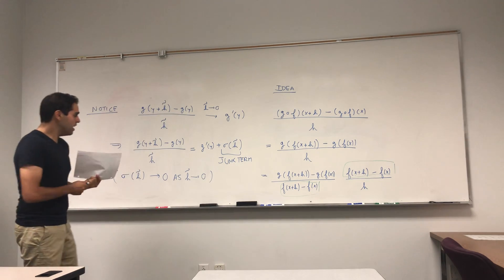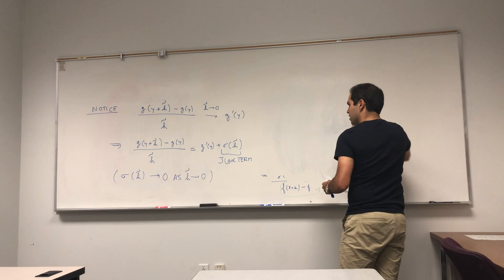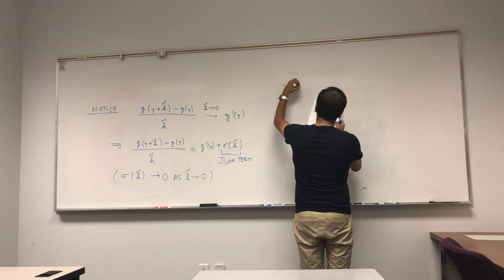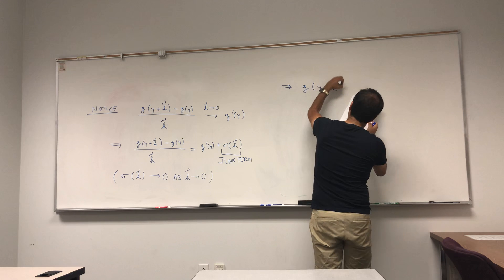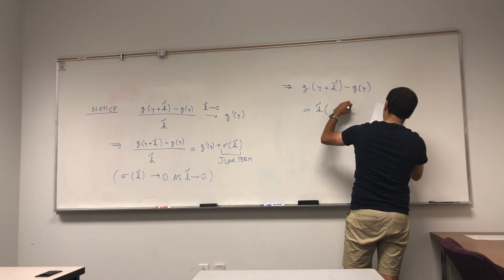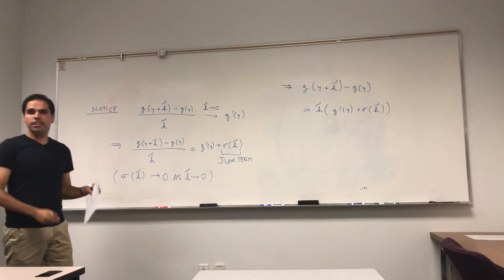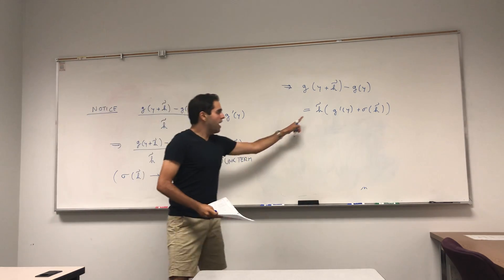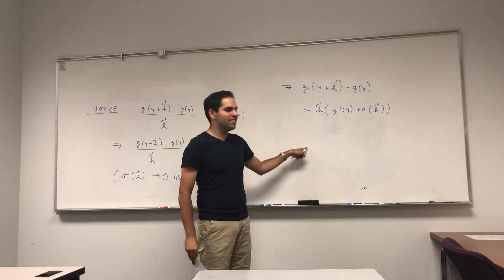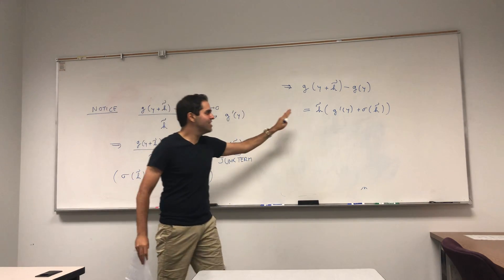This is supposed to remedy the earlier step. What we have is: multiplying through by h-tilde, g of y plus h-tilde minus g of y equals h-tilde times g prime of y plus sigma of h-tilde. The important thing is this works even if h-tilde is zero — and h-tilde will be the difference of the f's, so it remedies that case where the difference of f's could equal zero.